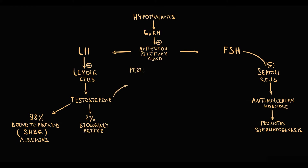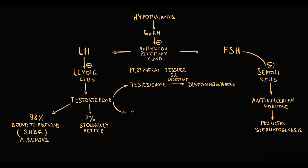So only 2% of testosterone in circulation is free, or biologically active. Testosterone can be delivered to peripheral tissues, where it can be converted by the 5-alpha reductase enzyme to dihydrotestosterone. Also, free testosterone can be delivered to adipose tissue, where extrahepatic aromatization converts testosterone into estradiol.